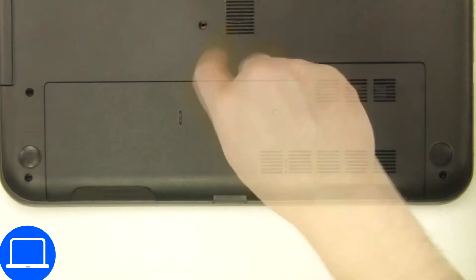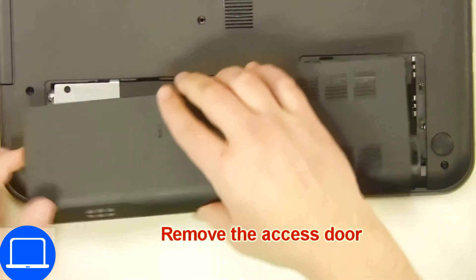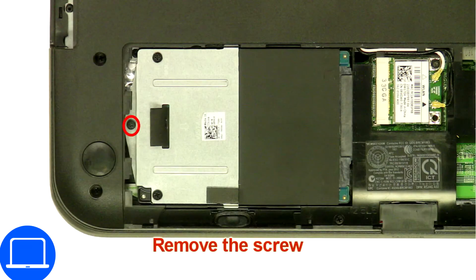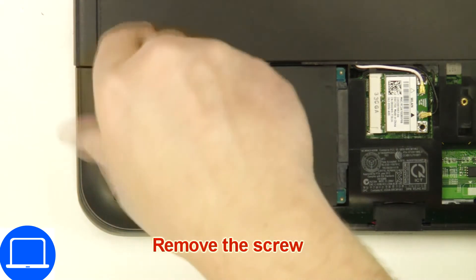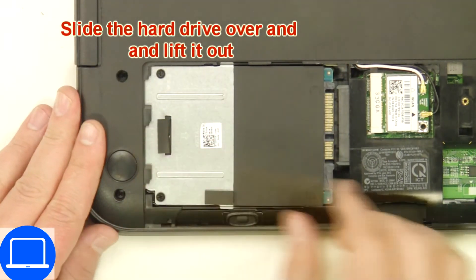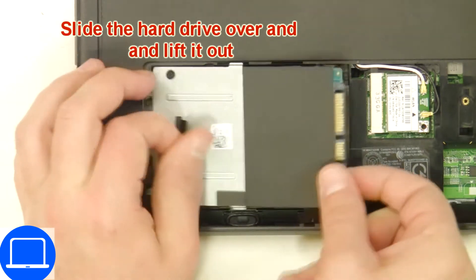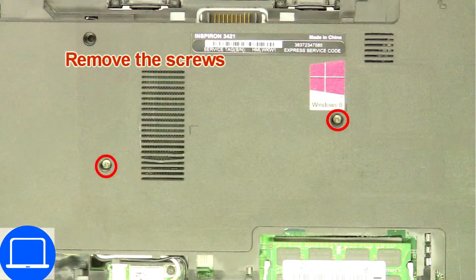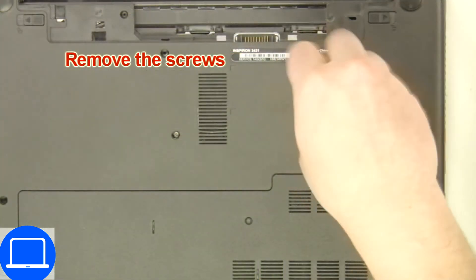Unscrew and remove the access door. Now unscrew and remove the caddy. Next, unscrew the bottom base.